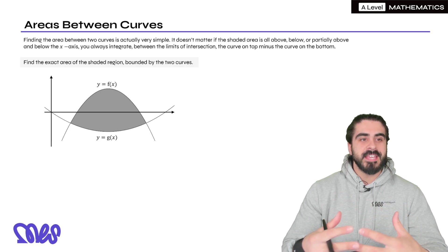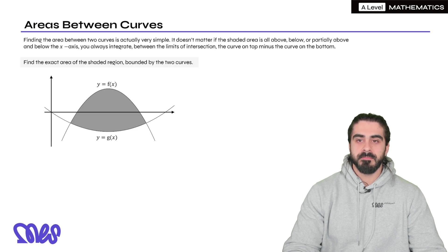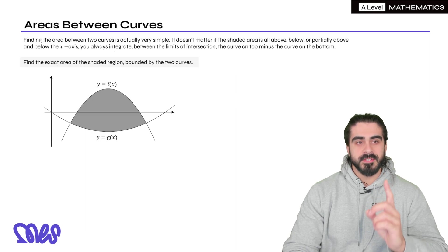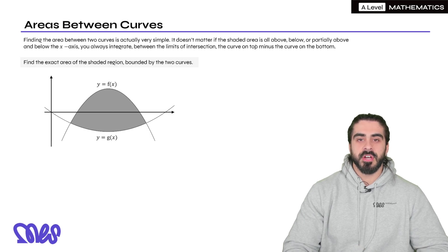To find the area between two curves, it doesn't actually matter if the shaded area is all above, below, or partially above and below the x-axis. You always integrate between the limits of intersection, the curve on top minus the curve on the bottom.